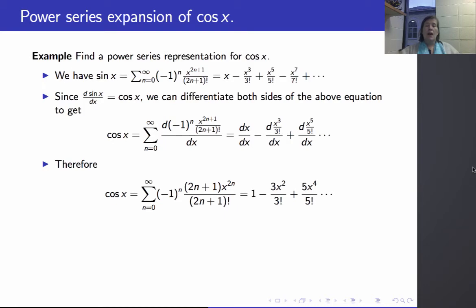And if I write this out, the expansion for cosine of x is 1 minus 3 times x squared over 3 factorial plus 5 times x to the 4 over 5 factorial, etc.